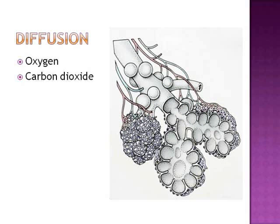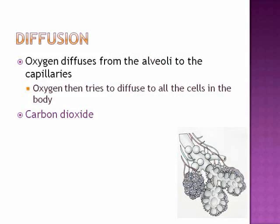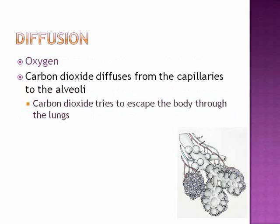Diffusion also has to do with oxygen and carbon dioxide, but here we're looking at the alveolar level. The alveoli are surrounded by capillaries. Oxygen diffuses from the alveoli to the capillaries, and then tries to diffuse to all the cells in the body. Carbon dioxide is trying to escape the body through the lungs, so it diffuses from the capillaries into the alveoli and then out of the body.